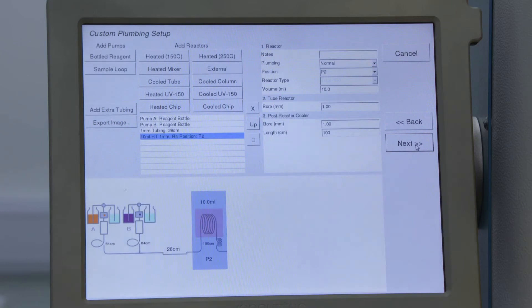I tell the system what configuration of reactors I'm using. So I told it that I have two pumps with bottled reagents and I told it what the concentration of those reagents are, what extra tubing I have, and what reactor I'm using. The rest of the tubing I've defined elsewhere.